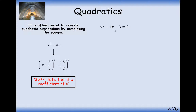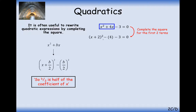What happens if we've got a minus 3 on the end? We'll ignore it for now, keep it at the end, and simplify later. So sort out x squared plus 4x first — half the 4 gives 2, so x plus 2 squared, take away 2 squared which is 4. Then hang the minus 3 on at the end. Now simplify those two values: x plus 2 squared minus 7 equals 0.